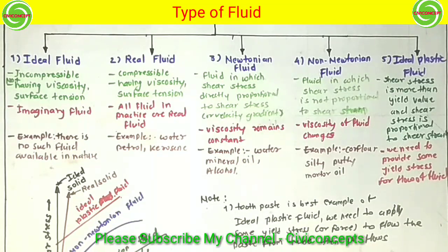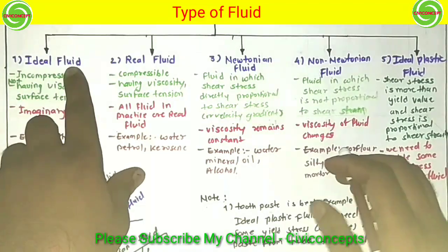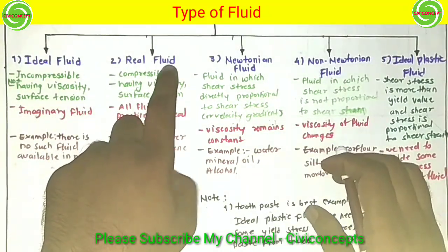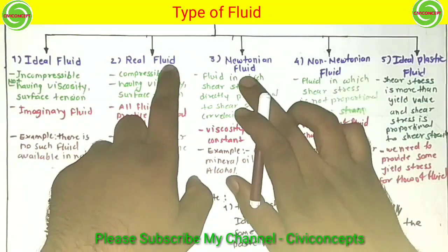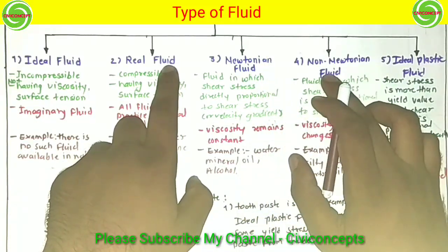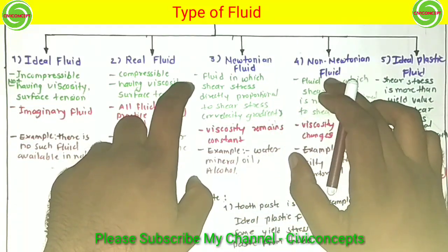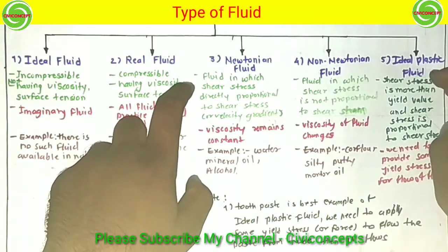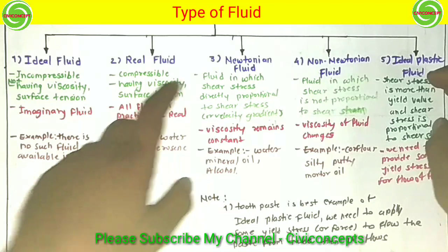There are five types of fluid in total. The first is ideal fluid, second is real fluid, third is Newtonian fluid, fourth is non-Newtonian fluid, and fifth is ideal plastic fluid.